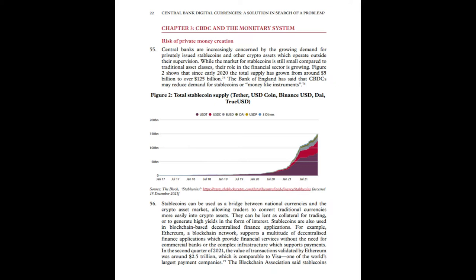Figure two shows the total stablecoin supply of the most popular stablecoins — including Tether, USD Coin (USDC), Binance USD, DAI, and TrueUSD — from January 2017 to July 2021. Since early 2020, the total supply of stablecoins has grown from around 5 billion dollars to over 125 billion dollars. The Bank of England has said that central bank digital currencies may reduce demand for stablecoins, or money-like instruments as they refer to them.